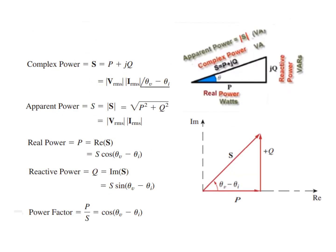We'll be using these formulas. The angle theta is theta_V minus theta_I — the angle of the voltage minus the angle of the current, sometimes simply called theta. Complex power is written as P plus jQ. Another way of writing complex power is in terms of V_rms, I_rms, and angle (theta_V minus theta_I). Apparent power, without the angle, is just the magnitude: V_rms magnitude times I_rms magnitude.